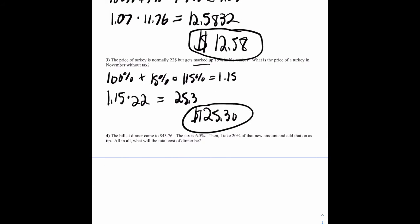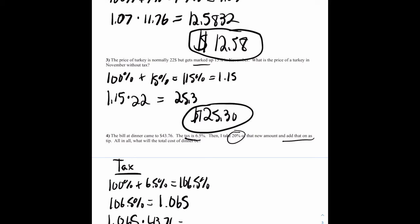And then for number four, the dinner bill came to $43.76. The tax is 6.5%. That's going to increase it. Then I take 20% of that new amount and add that on. So it looks like we've got two steps here. We're going to tax our total. Let's do that first. What the tax is going to result in. So we have 100% plus the 6.5% we're doing for tax will be 106.5%. So we're going to do that as a decimal. 106.5% equals 1.065. 1.065 times 43.76 equals 46.6044 rounded at the very end. So keep that amount.